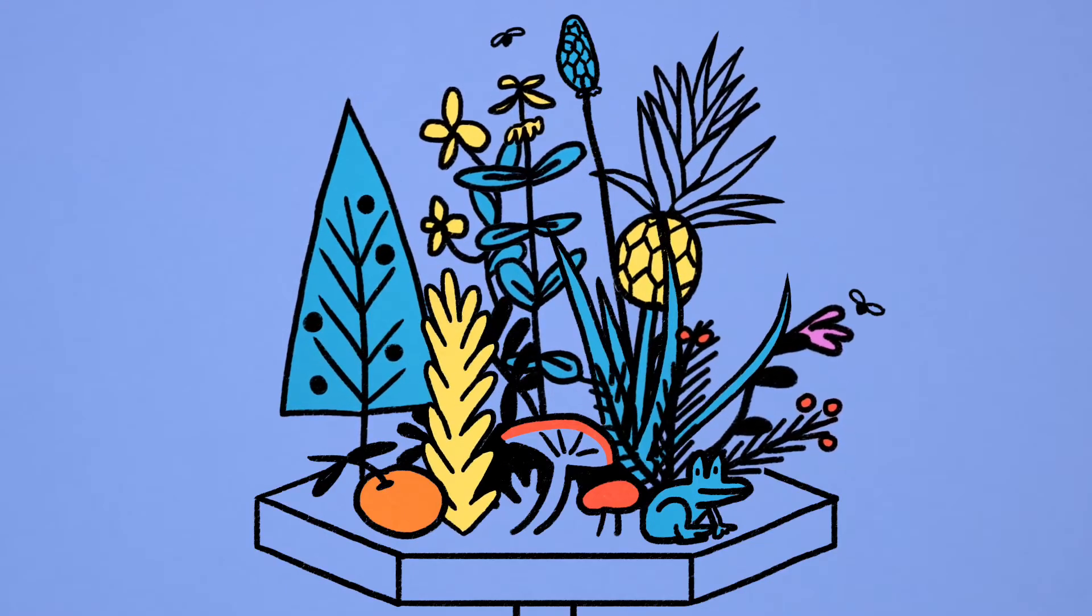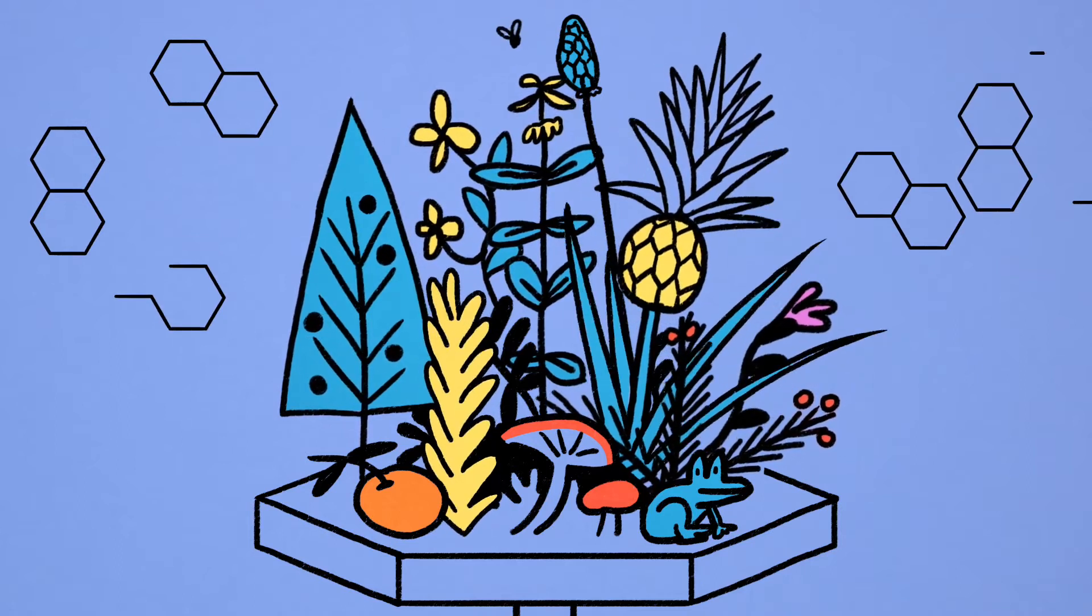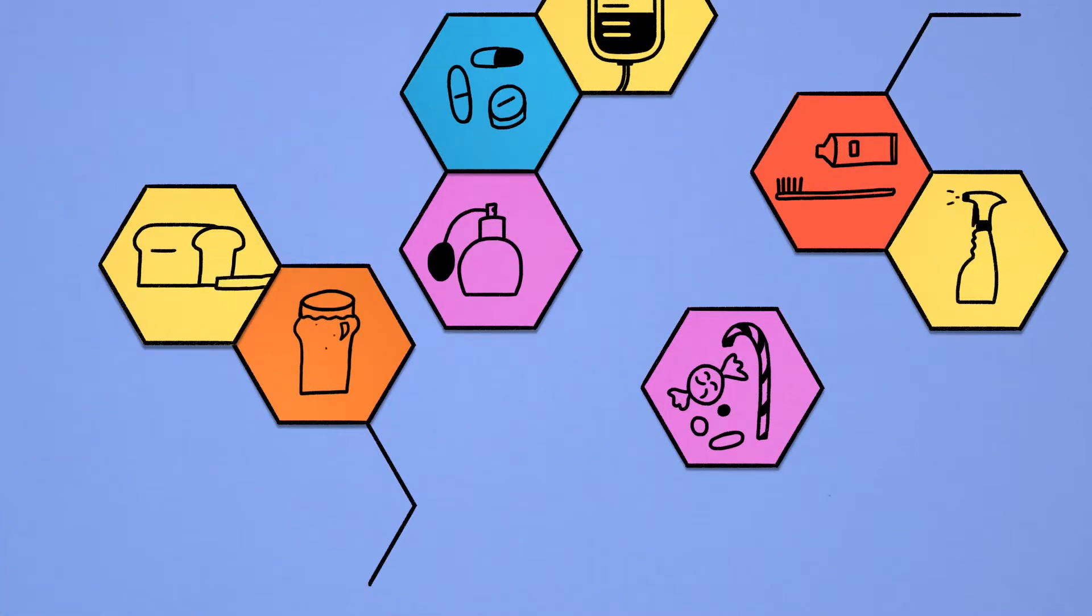Across the natural world, trees, plants and organisms produce a huge array of chemicals with all sorts of useful properties.